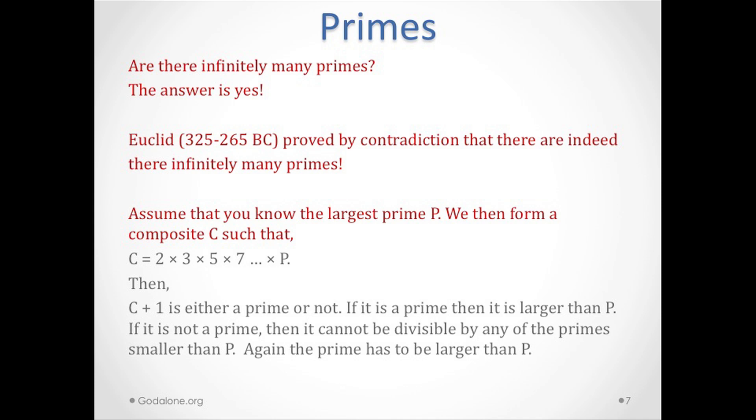Assume that you know the largest prime p. Then we can form a composite c such that c is equal to 2 × 3 × all of the primes before that p. The multiplication of all of this, then we add one to it. That's how the proof goes. So c + 1 is either a prime or not.